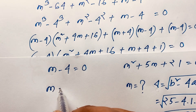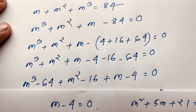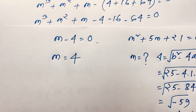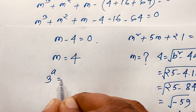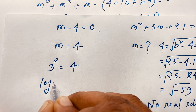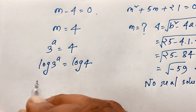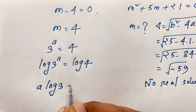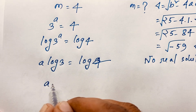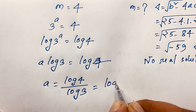From Case 1, m = 4. Since m = 3^a, we have 3^a = 4. Applying logarithm to both sides: a·log 3 = log 4. Dividing both sides by log 3 gives a = log 4 / log 3.